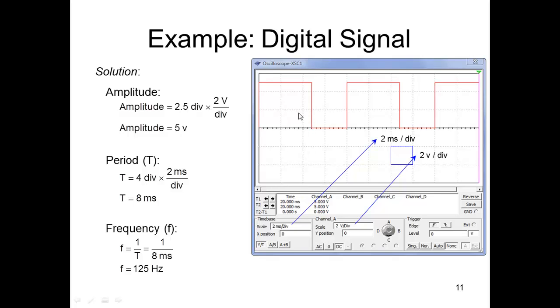The period here, it says two milliseconds per division, and so it's two, oh, I was doing the time high. So this is two, four, six, eight, right? The period is eight milliseconds.